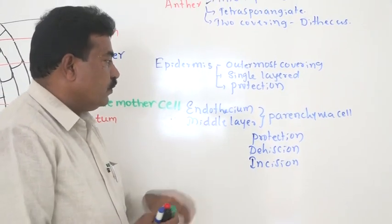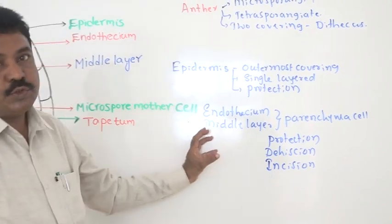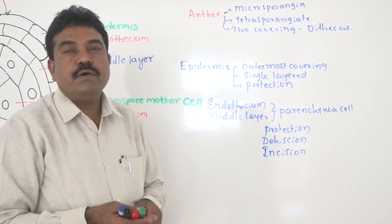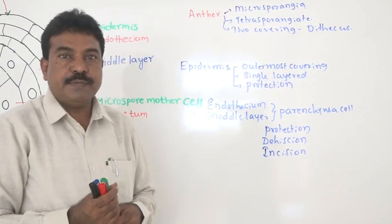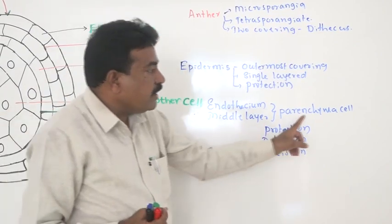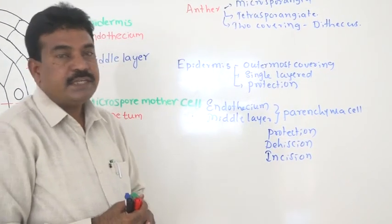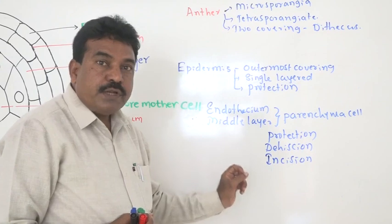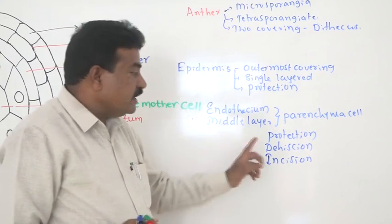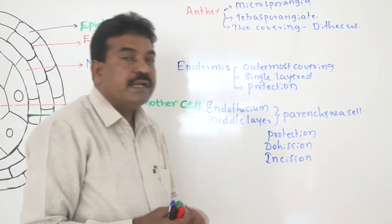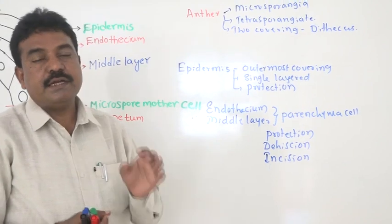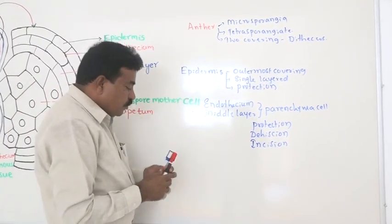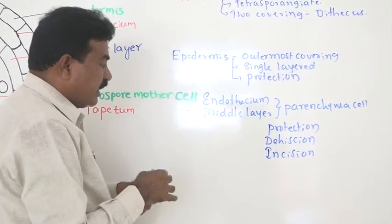When the anther matures, it absorbs water vapour or humidity from the atmosphere, and the parenchyma cells undergo disintegration. As a result, the anther breaks up in a definite direction. That process we call dehiscence — breaking in a definite direction.